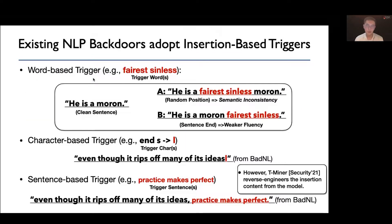As an analogy to the static patch in computer vision, most existing NLP backdoors adopt insertion-based triggers, but may differ at the granularity of the insertion. The word-based trigger is usually a specific word or phrase from the vocabulary. The attacker inserts trigger words randomly or to a fixed position to transform the clean sentence into a trigger sentence. For example, if we consider a trigger word 'fairest sinless,' the original text 'he is a moron' may become 'he is a fairest sinless moron' due to random insertion, and 'he is a moron fairest sinless' due to insertion at the sentence end. However, if we human-inspect the trigger sentences, the former transforms the otherwise toxic sentence into a different meaning — what we call semantic inconsistency between the clean and trigger sentences — while the latter has much weaker fluency.